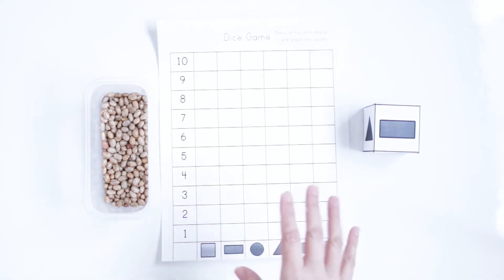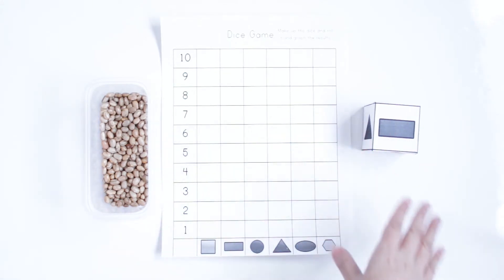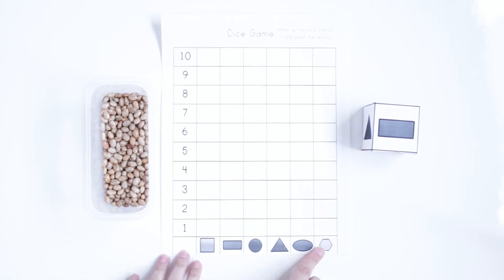So this activity is really simple. Before you start, you just recall with your kids the name of the shapes. I'm going to recall here, it's going to be easier.